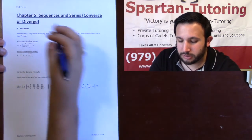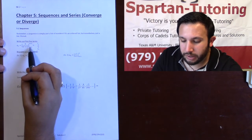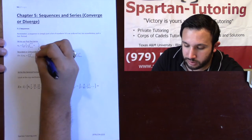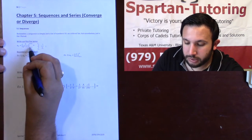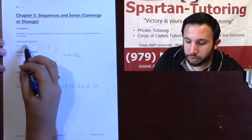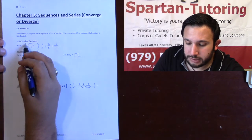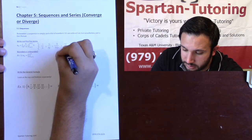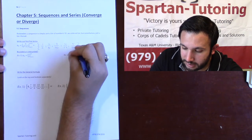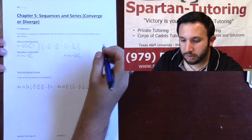A lot of people freak out about sequences — it's just a list of numbers. If I want to write out the first few terms from n=1 to n=5, I plug 1 into n and get 1/2; plug in 2 and get 2/5; plug in 3 and get 3/10; plug in 4 and get 4/17; plug in 5 and get 5/26. That is a sequence — a list of numbers.